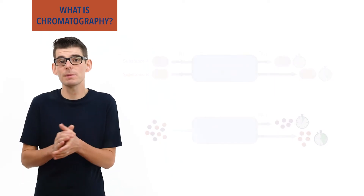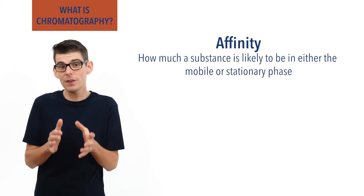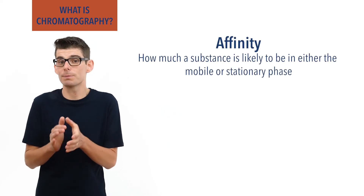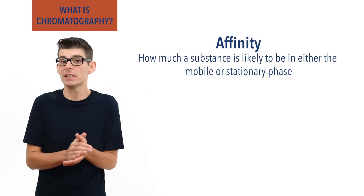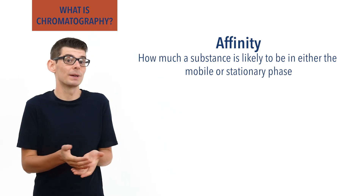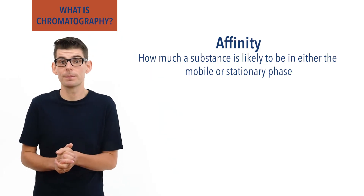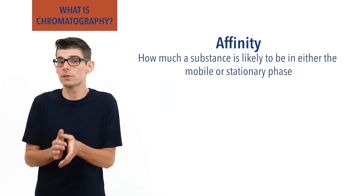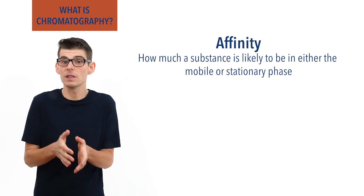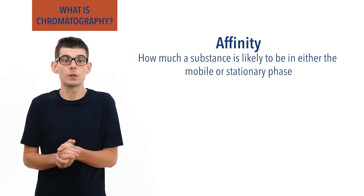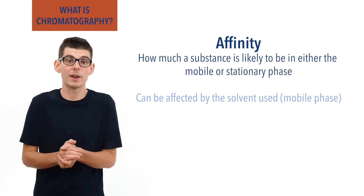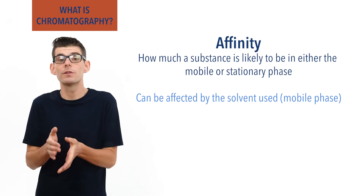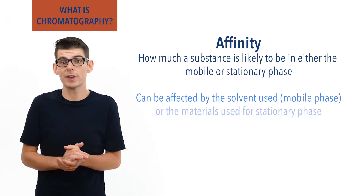How much time a substance spends in one phase compared to the other is referred to as its affinity, and this is based on specific properties of the substance such as its polarity. The affinity of a substance for either phase can be affected by the solvents used for the mobile phase or the materials used for the stationary phase.